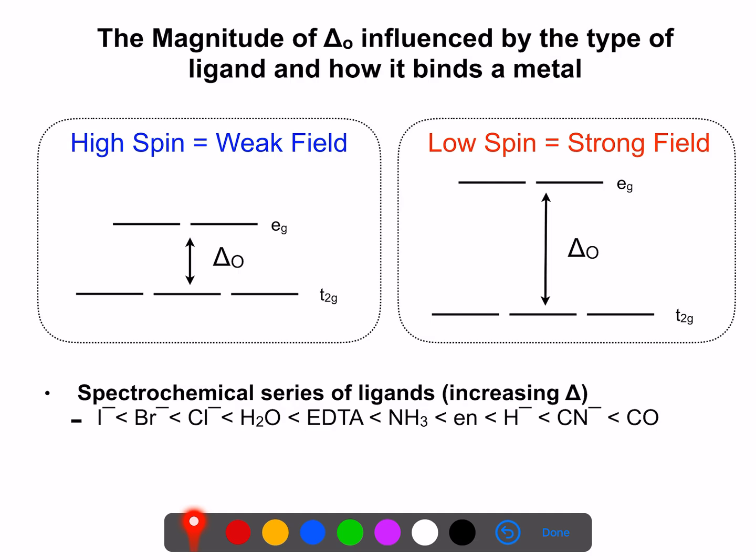Empirically, we developed the spectrochemical series, and we could say things like iodide, bromide, chloride, water, would be weak field ligands, so these are going to produce high spin complexes, where things like hydride, cyanide, or carbon monoxide are strong field ligands, which would give rise to low spin complexes. So as you go from left to right on the spectrochemical series, what we're seeing is delta-o is increasing.